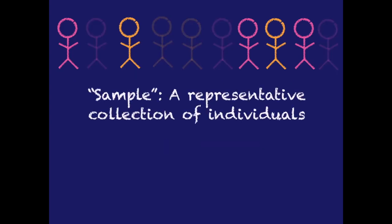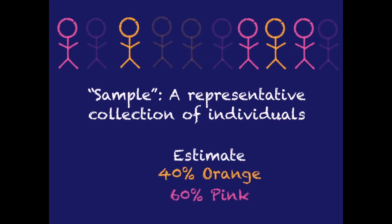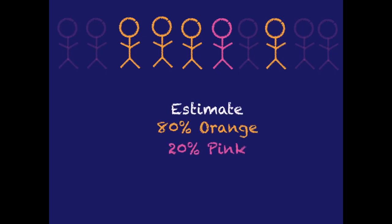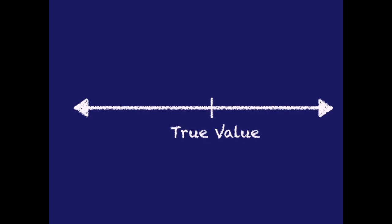A sample is a representative collection of individuals from this voting population. This particular sample is a very good sample — it exactly matches the original population distribution, with 40% orange and 60% pink. But not every sample is this good. We could have 60% orange and 40% pink, which is off by 20%, or even worse, 80% orange and 20% pink. Different samples will have different estimates, some underestimating and some overestimating the percentage of orange votes, and some further from or closer to the true value.